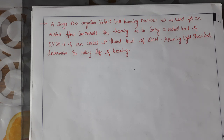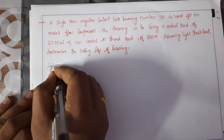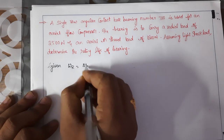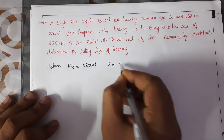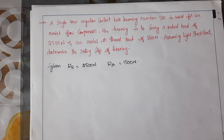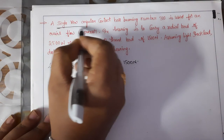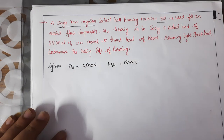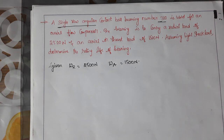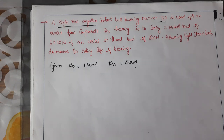Assuming light shock loads, we need to determine the rating life of the bearing. Since the question directly mentions the bearing type as single row angular contact ball bearing and also gives the bearing number 310, we don't need to strain our brains much. We will directly take the values from the angular contact bearing with bearing number 310.